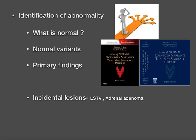Before coming to abnormal findings, know what is normal, what the normal anatomical variants are, and then the primary findings, before considering incidental lesions. In radiology, we need to know normal anatomy and normal variations which should not be confused with disease. There are books and websites — if you search RSNA journals, you will find a lot of anatomical variations in each and every system.